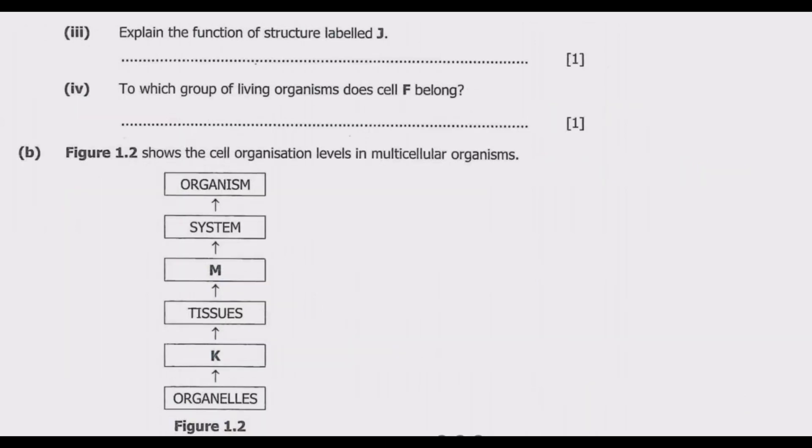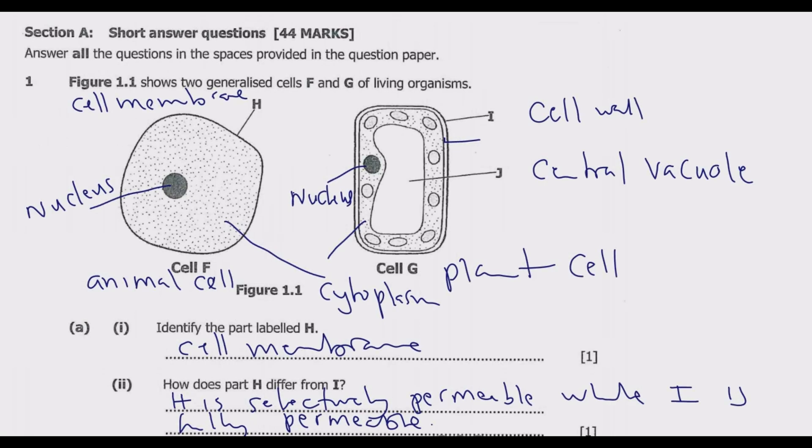Next, part iii: Explain the function of structure labeled J. So now we have identified what J is. J is central vacuole. So the function of the central vacuole is to store water and maintain turgor pressure in a plant cell.